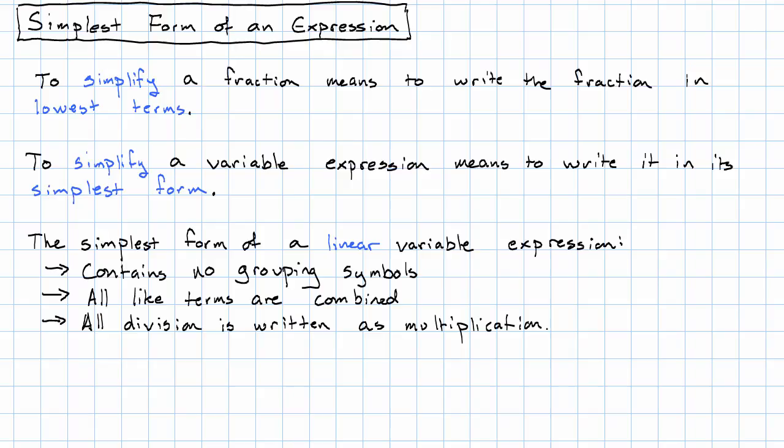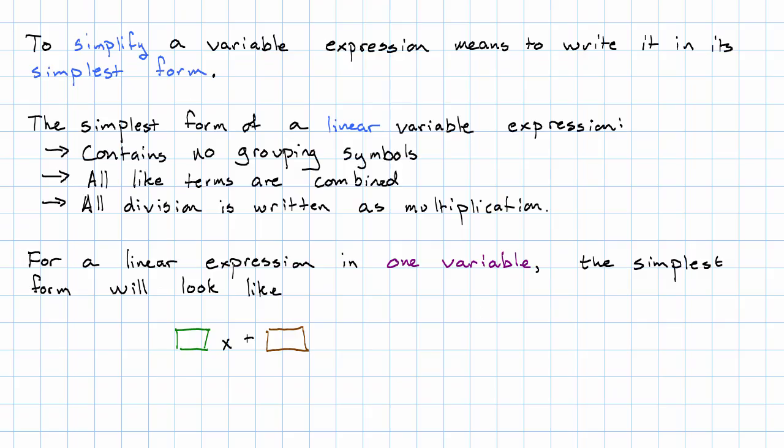So, what's that going to look like? Just a number times the variable plus another number. For reasons that will become clear later, we tend to call the number that's multiplied by X, M, and call the constant B.